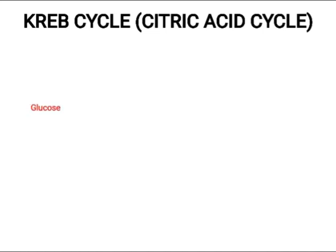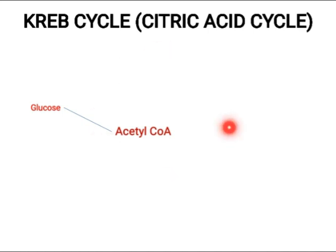Welcome back, this is Vilal, and this lecture is based on the Krebs cycle, which is also known as the citric acid cycle. Before this, we know that glucose converts into pyruvate, and after that we get Acetyl CoA. This process is called glucose metabolism.